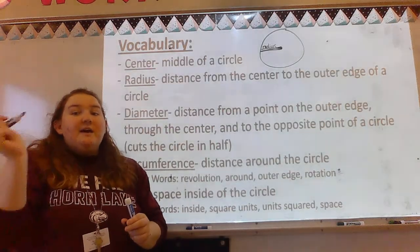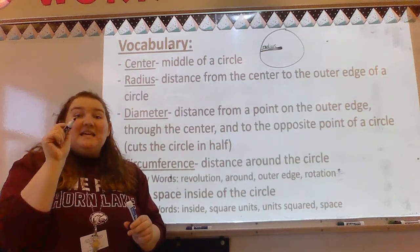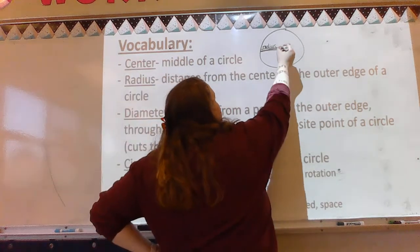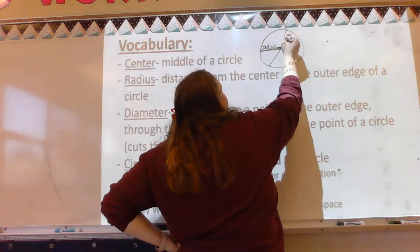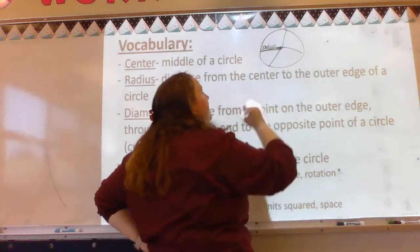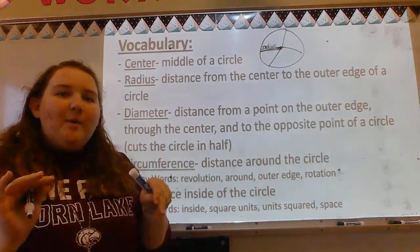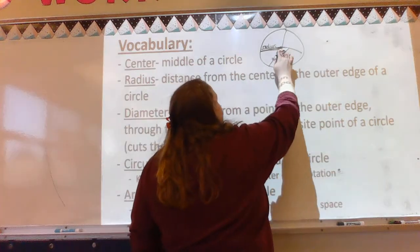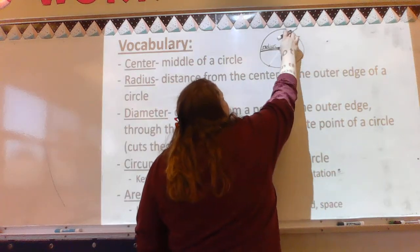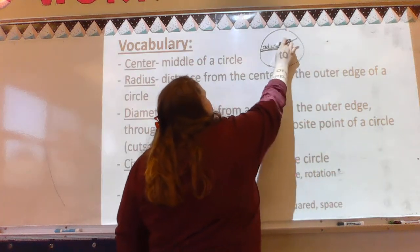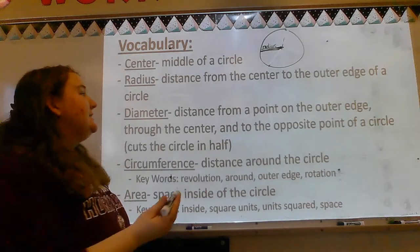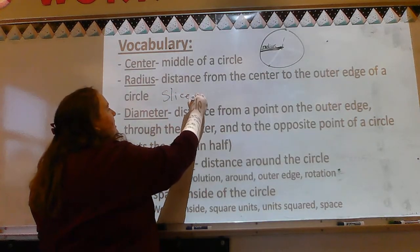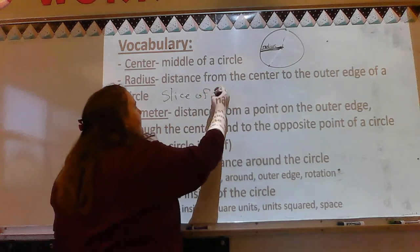It doesn't just have to be on the side. Any line from the center to the outside counts as a radius — it could go here to here, here to here, here to here. It starts to look kind of like a spiderweb, but anything from the center to the outside. I like to tell people your radius is kind of like your slice of pizza.